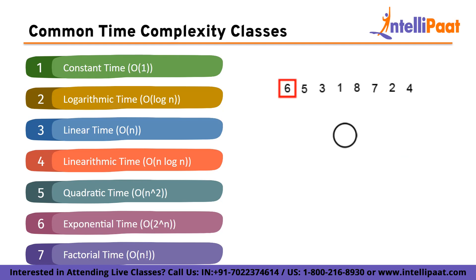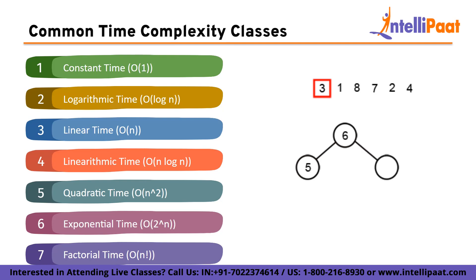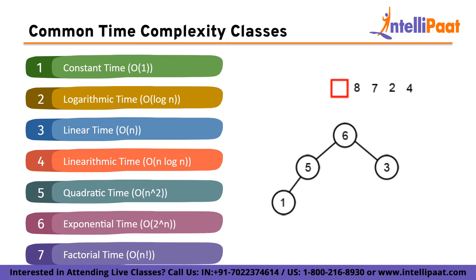Finally, factorial time, or O(n!) complexity. Algorithms with factorial time complexity have a runtime that grows factorially with the input size. These algorithms are highly inefficient and typically arise in problems involving permutations or combinatorial calculations. They are generally infeasible for even moderately sized inputs.